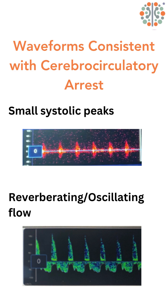The second pathognomonic pattern is reverberating or oscillating flow, which denotes signals that have both forward and reverse flow during one cardiac cycle. The area under the curve of the forward and reverse flows should be approximately equal, denoting no net forward flow.